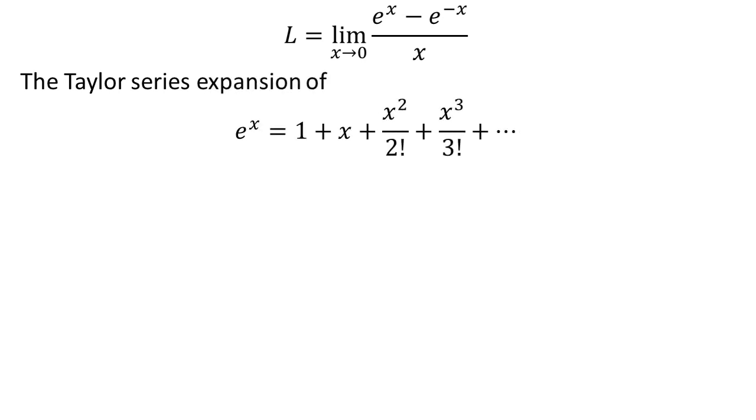The Taylor series expansion of e^x near x equals 0 is 1 plus x plus x squared upon factorial of 2 plus x cubed upon factorial of 3 and so on.